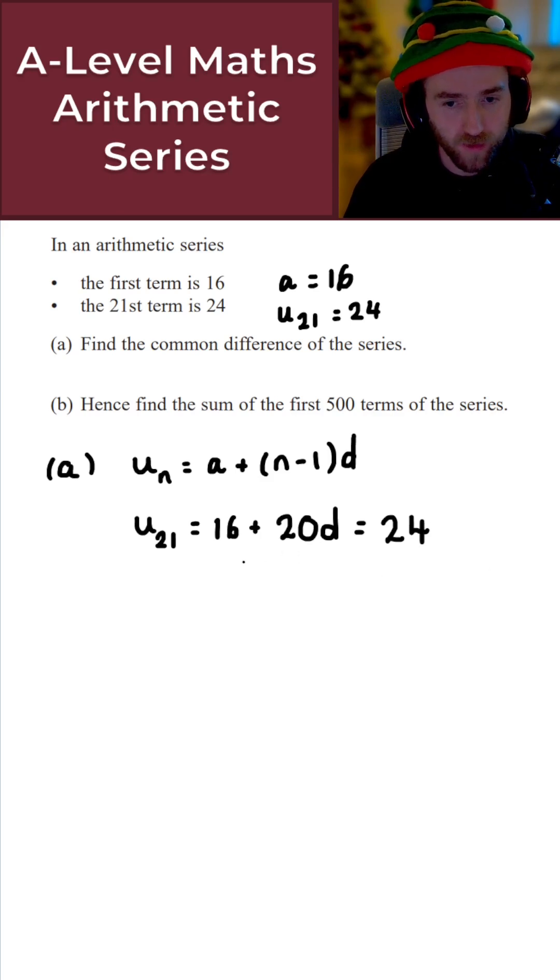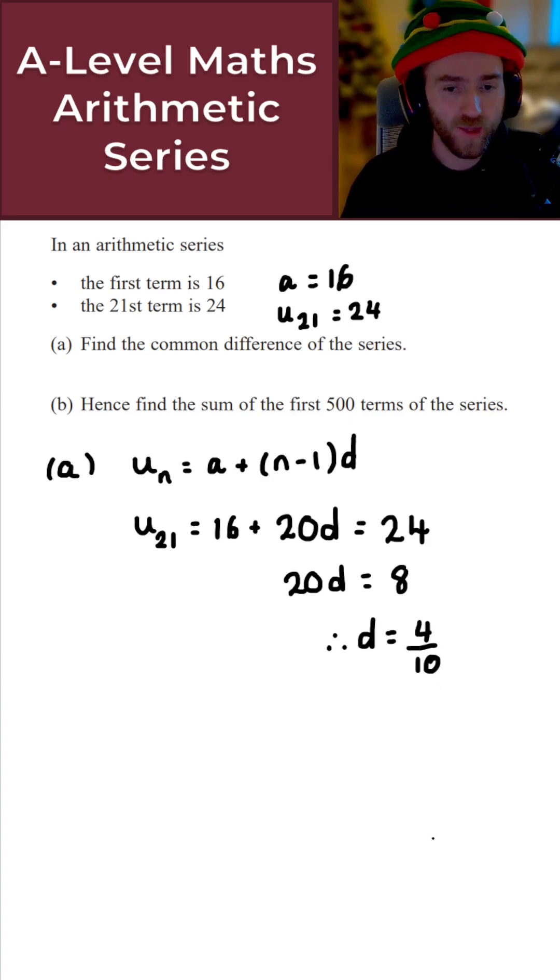From here then let's just solve for d. So 24 minus 16 is just 8, so I get 20d is equal to 8. In that case then d here is just the same as 4 over 10 or 0.4, whichever you prefer. There we go, that gives the common difference of the series.